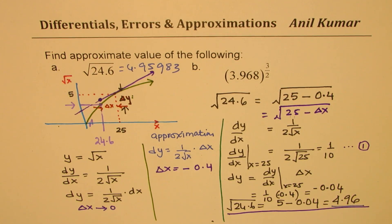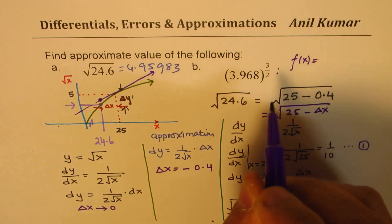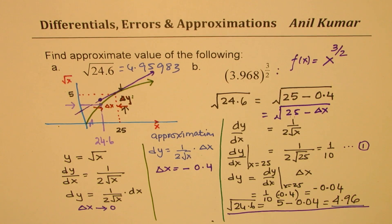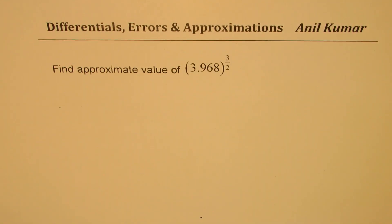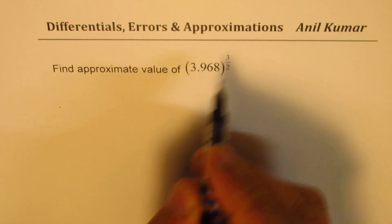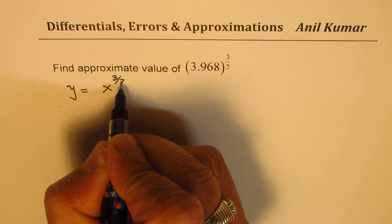Now, you can actually pause the video and solve for the next question. In this case, our function f(x) will be x to the power of 3 over 2. Follow these steps to get the answer. So we are given 3.968 to the power of 3 over 2. That means our function y will be equal to x to the power of 3 over 2.